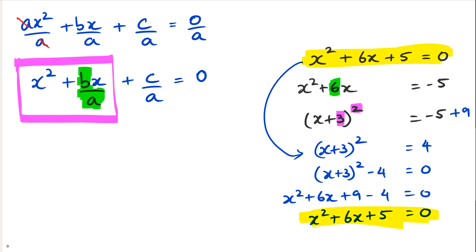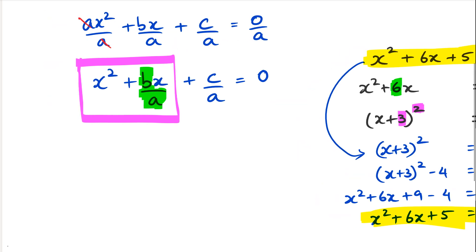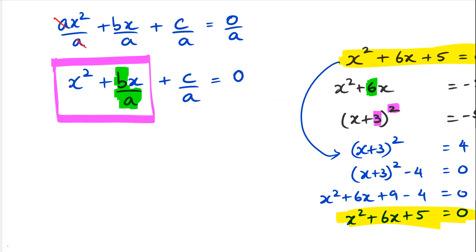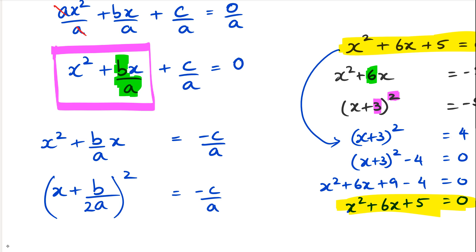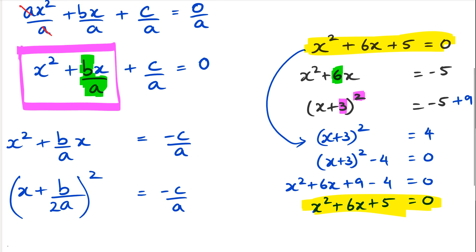Now going back to our general quadratic equation, we follow the same steps. We write x² + (b/a)x = −c/a. Then we take the coefficient of x, which is b/a, divide it by two to get b/(2a), and square it. So we have (x + b/(2a))² = −c/a.